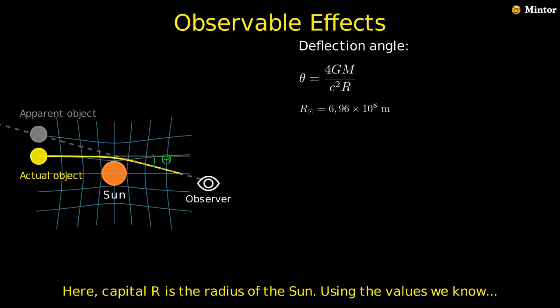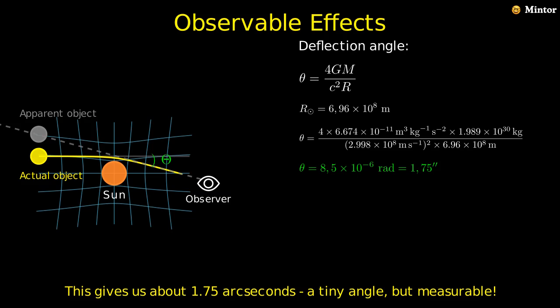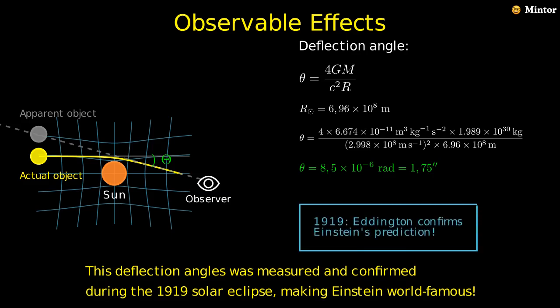Here, capital R is the radius of the sun. Using the values we know, substituting our values into the formula, this gives us about 1.75 arc seconds, a tiny angle but measurable. This deflection angle was measured and confirmed during the 1919 solar eclipse, making Einstein world famous.